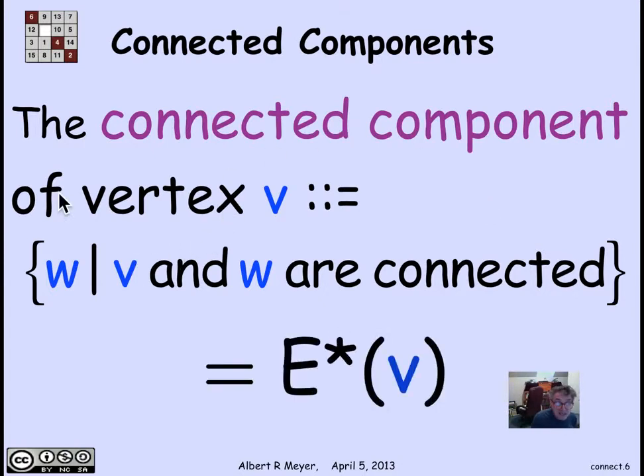Another way to define this, the set of W that are connected to V, is simply taking the image of V under the greater than or equal to 0 walk relation. E star is our notation for the walk relation in the graph whose edges are E, including walks of length 0.